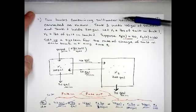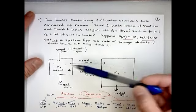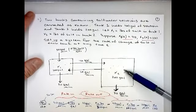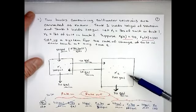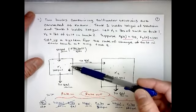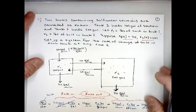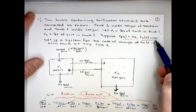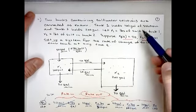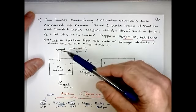Here we have two tanks, both full of water salt solutions. Tank one holds 100 gallons, tank two holds 200 gallons. Initially, tank one has 40 pounds of salt, and tank two at the beginning has 100 pounds of salt.